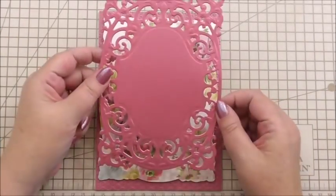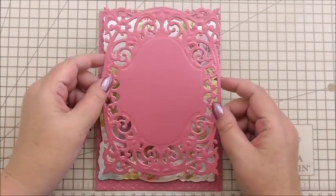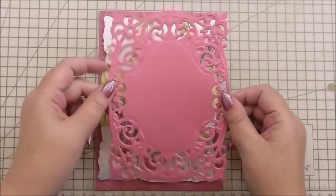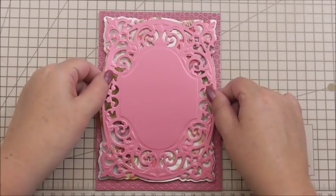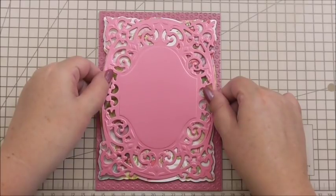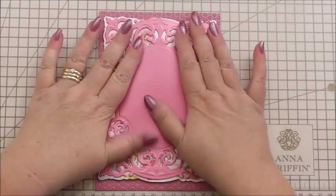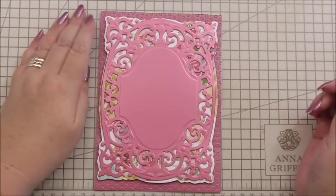My next layer is the die cut of the actual frame. I've used the raspberry satin cardstock from Anna. This is on flat tape, and I'm simply laying it over the previous layer, which was our shadow layer. Like so.